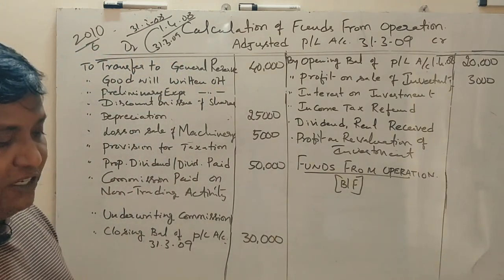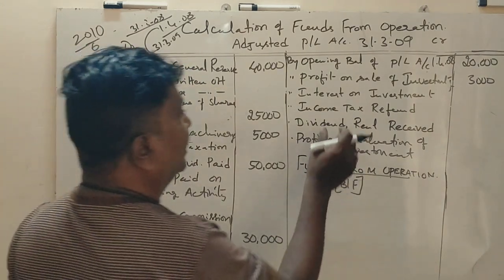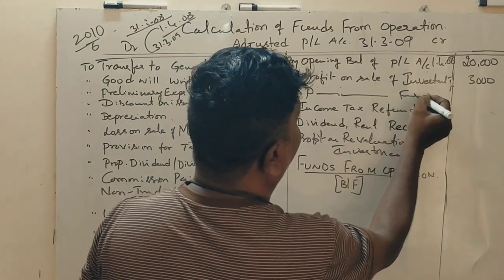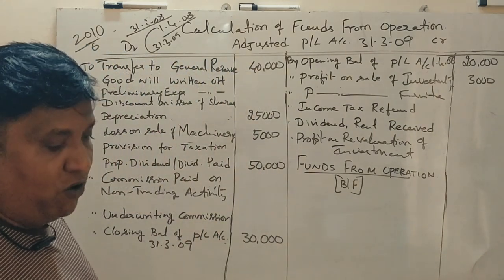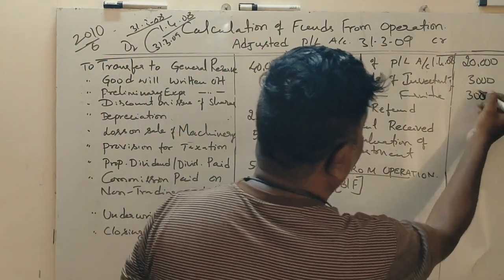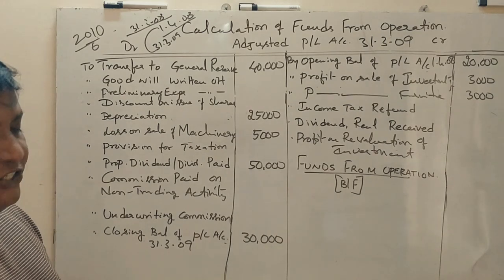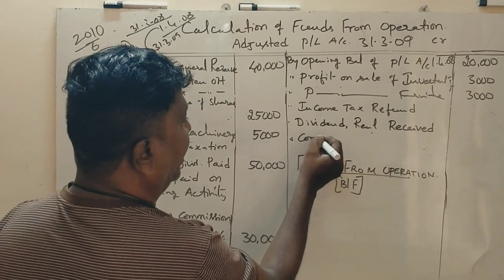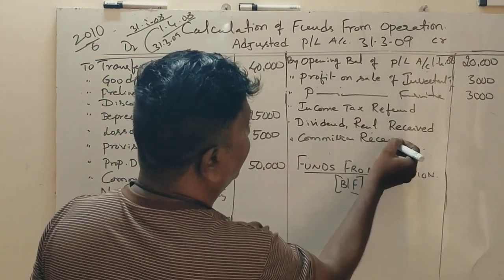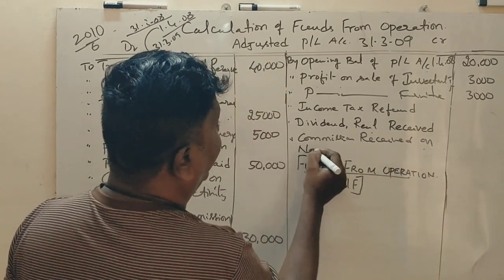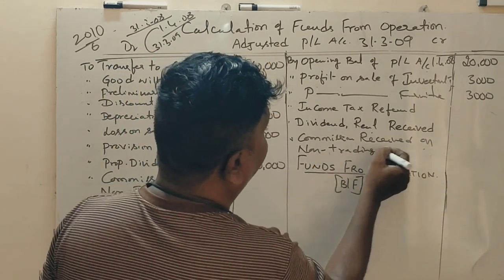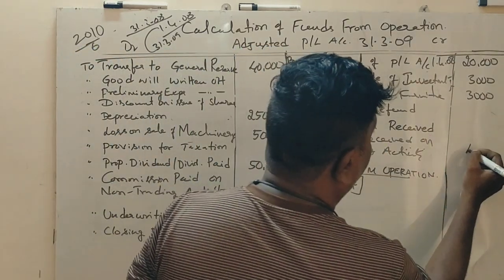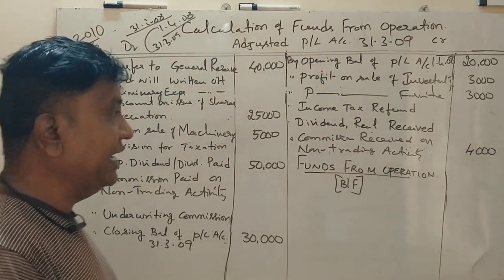Profit on sale of furniture is Rs. 4,000. Commission received on non-trading activity is Rs. 4,000. These two points are clear.